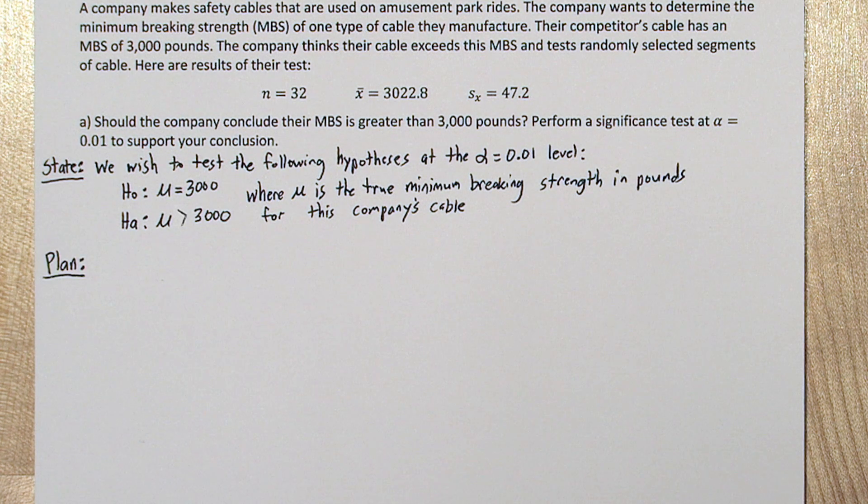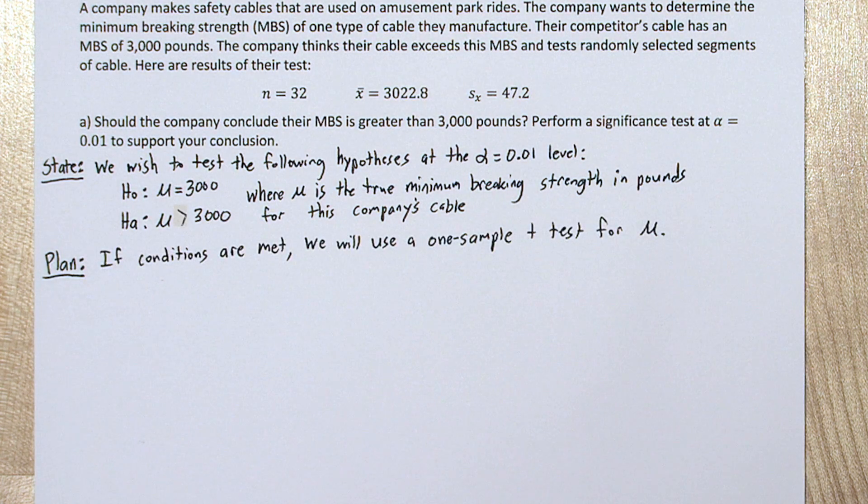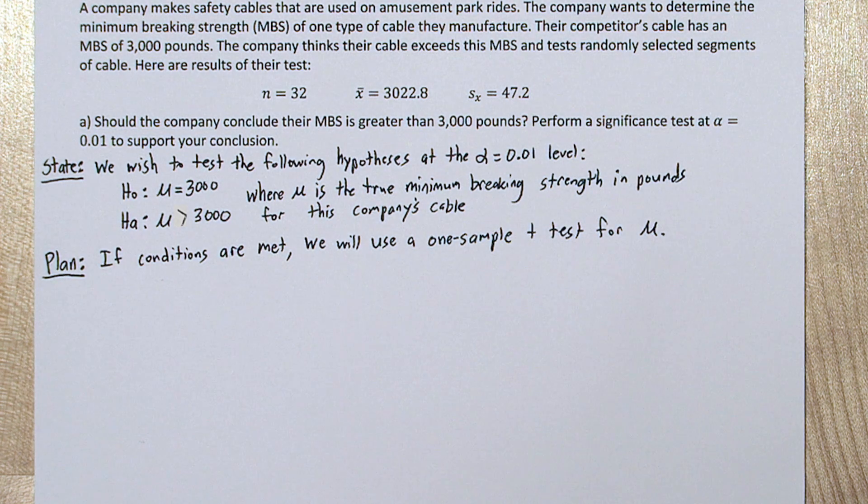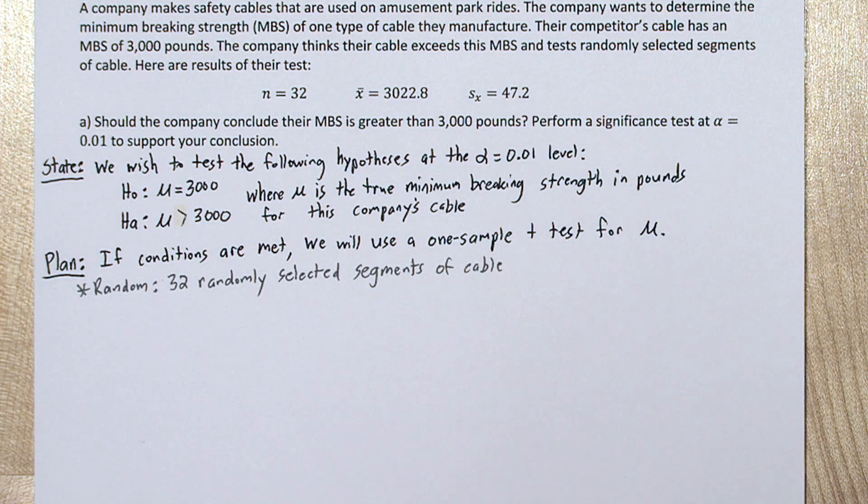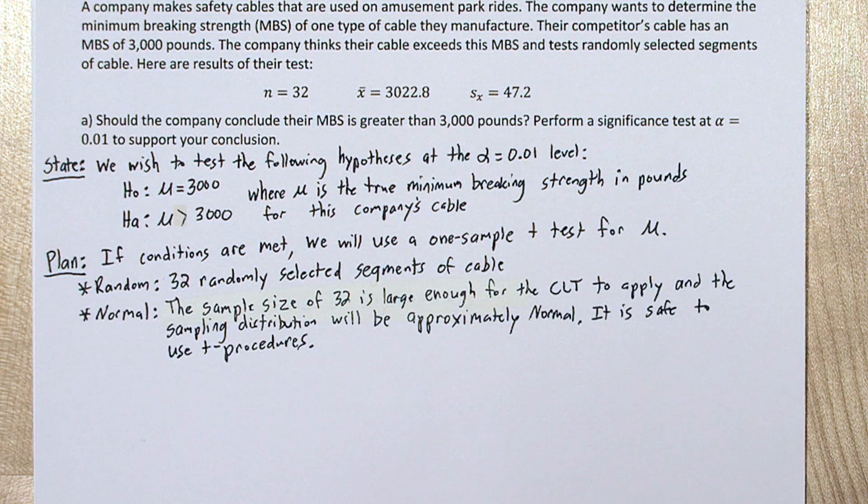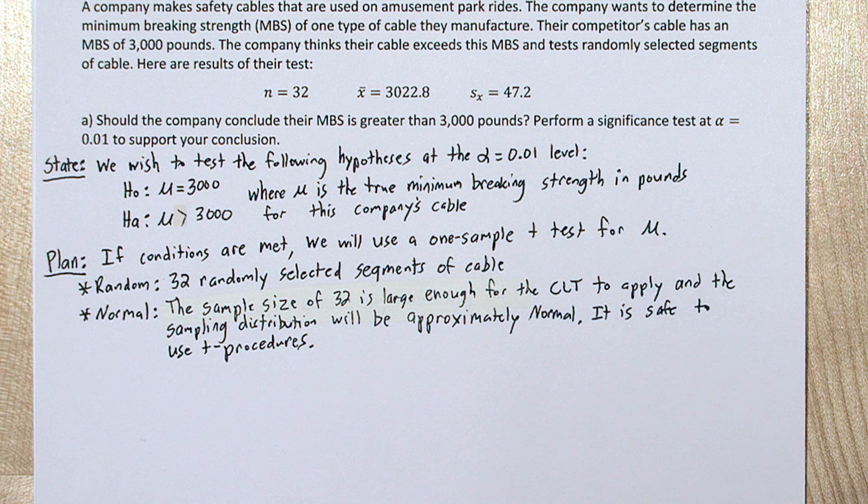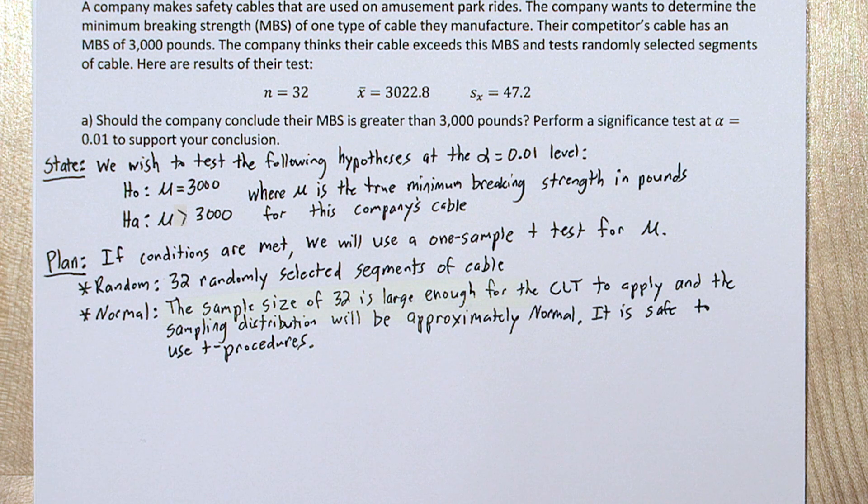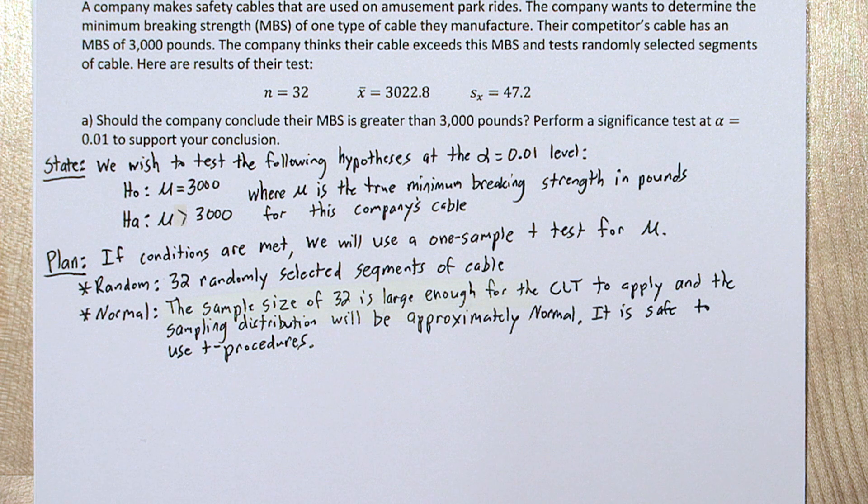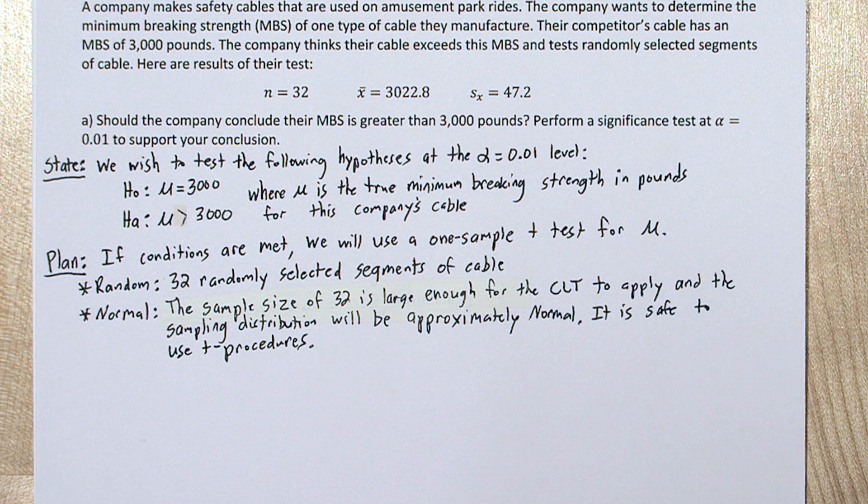In the plan step we need our inference method and also to check conditions. So we say if conditions are met we will use a one-sample t-test for mu. The random condition is met because we used 32 randomly selected segments of cable. For the normal condition, since the sample size is 32, it's large enough for the central limit theorem to apply, and for the sampling distribution to be approximately normal. That means it's safe to use t-procedures.